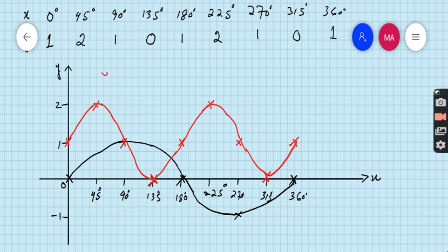This is the graph of y equals 1 plus sin 2x, and this is the graph of y equals sin x, the black one.